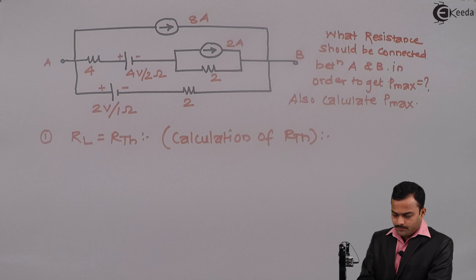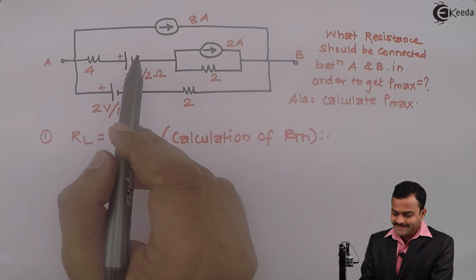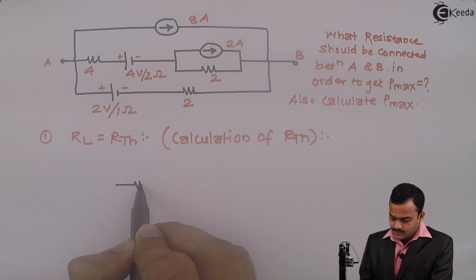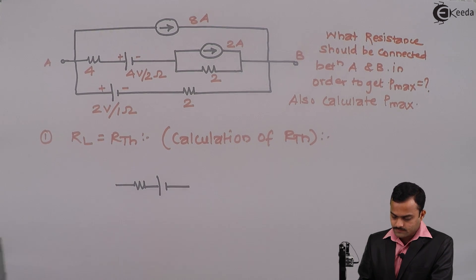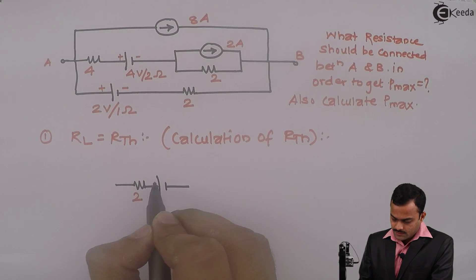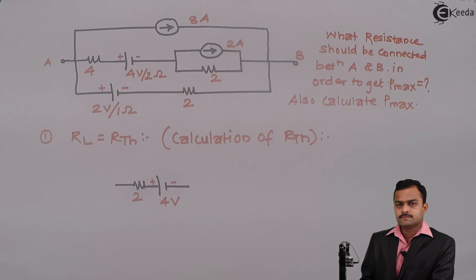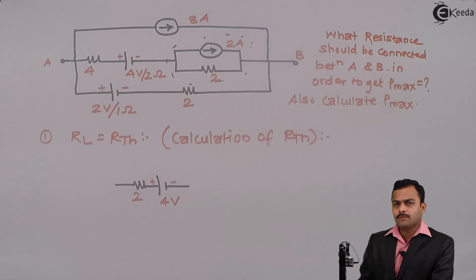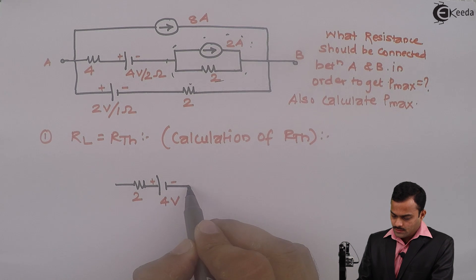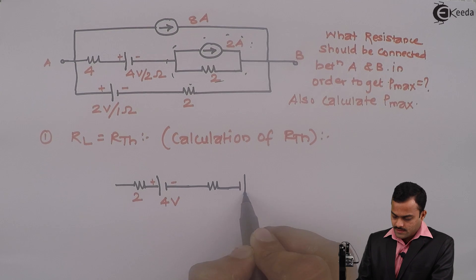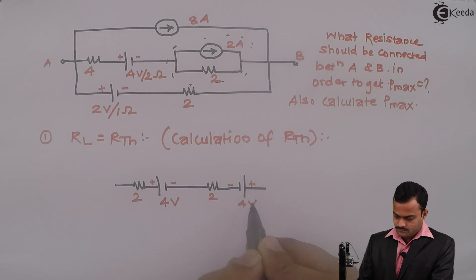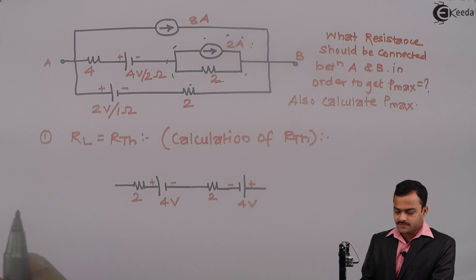Before solving the problem, it is a practical voltage source given. How I am going to convert that? It is nothing but a resistance and a voltage source — a 2 ohm resistance connected in series with a voltage source of 4 volt. Now it is easy to analyse. Next, let us convert this current source into a voltage source, reducing the number of loops. If I convert this into a voltage source, it will be a 2 ohm resistance in series with 2 multiplied by 2 = 4 volt battery, and the rest of the circuit will remain as it is.